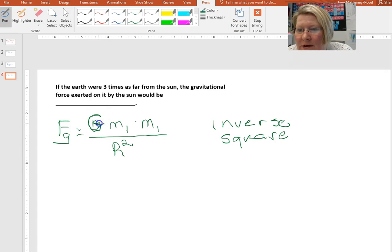So I don't have an actual problem where we're going to plug in numbers for the objects that we're calculating the force for. But the question is if the earth were three times as far from the sun as it is now, the gravitational force exerted on it by the sun would be what?